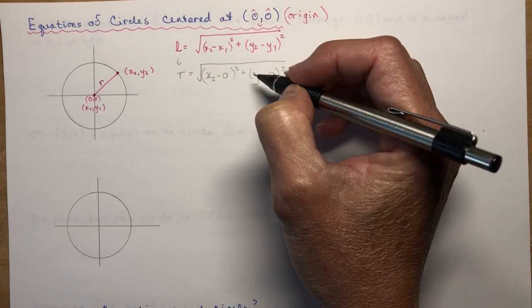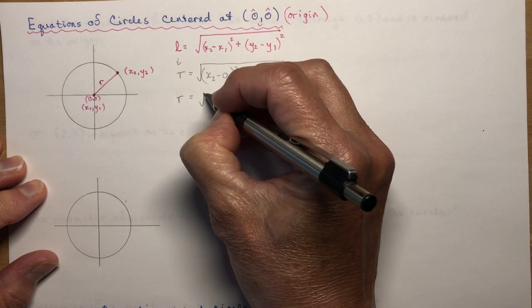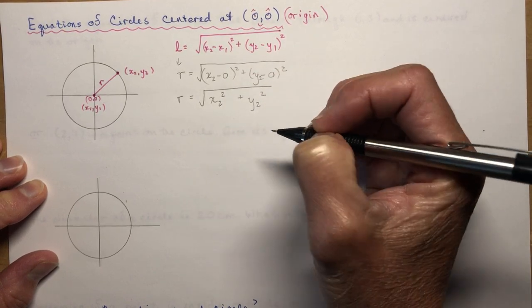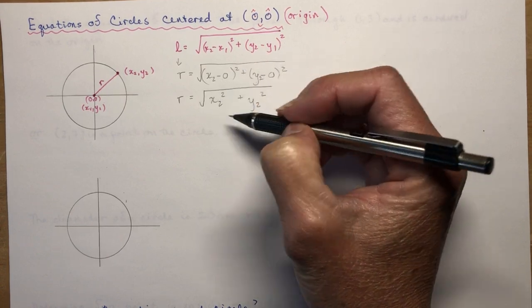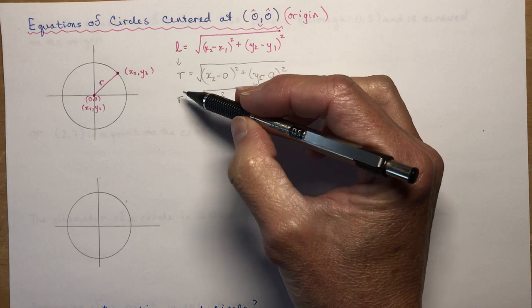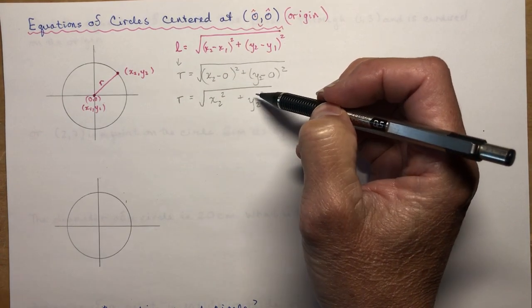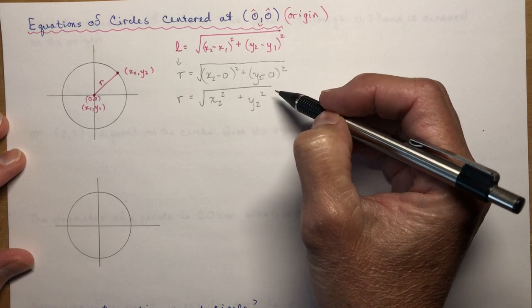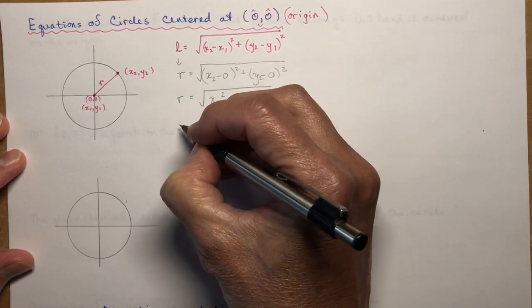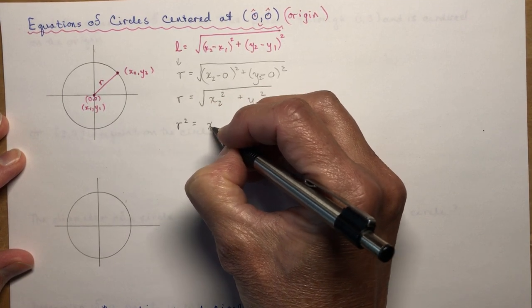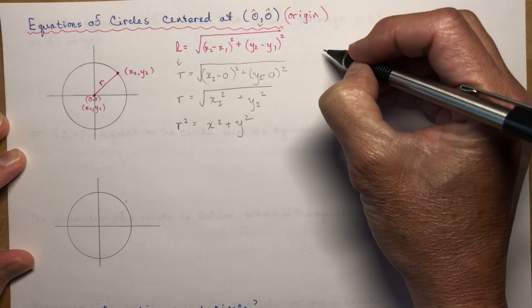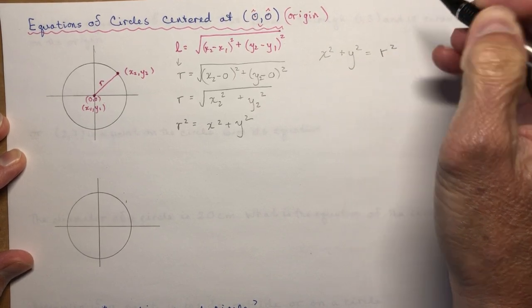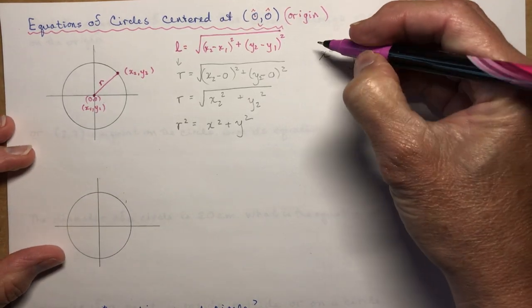We'd say the radius is going to be the square root of x2 minus 0 squared plus y2 minus 0 squared. Subtracting 0 just means x2, so I have the square root of x2 squared plus y2 squared. To get rid of the radical sign, I square both sides. A radical is like taking the square root — it's to the half power — so squaring gives a power of 1. Therefore R squared equals x2 squared plus y2 squared, or written as x² + y² = R².